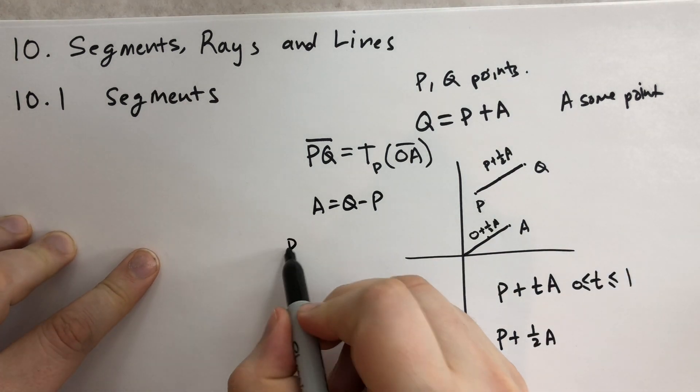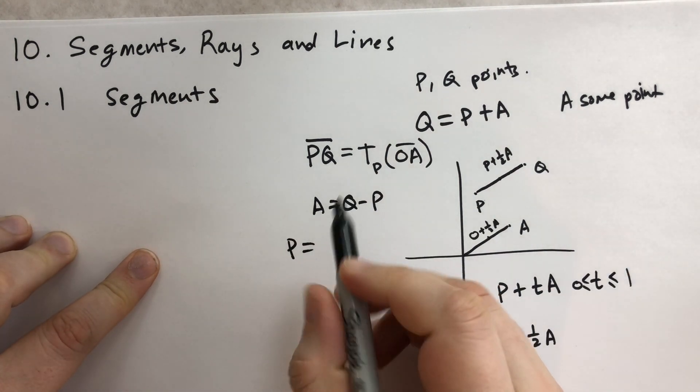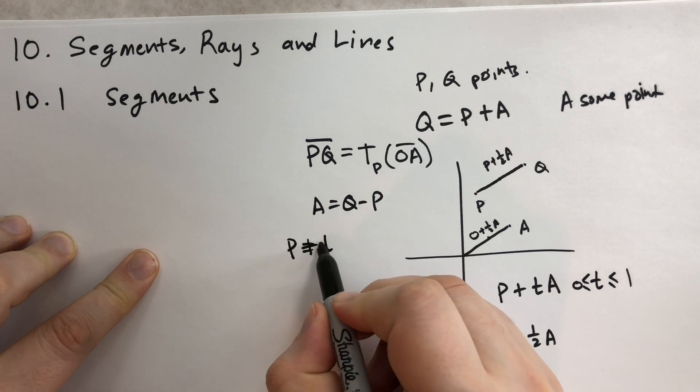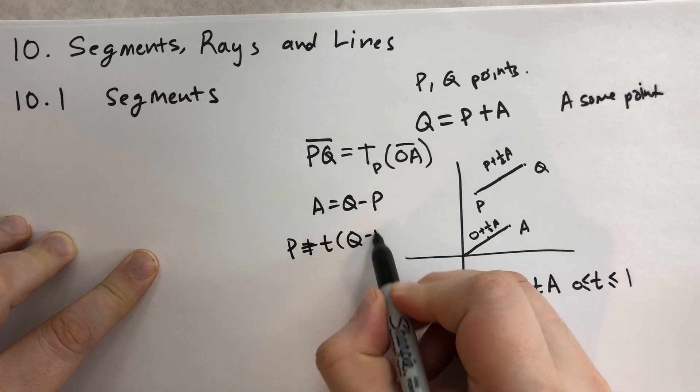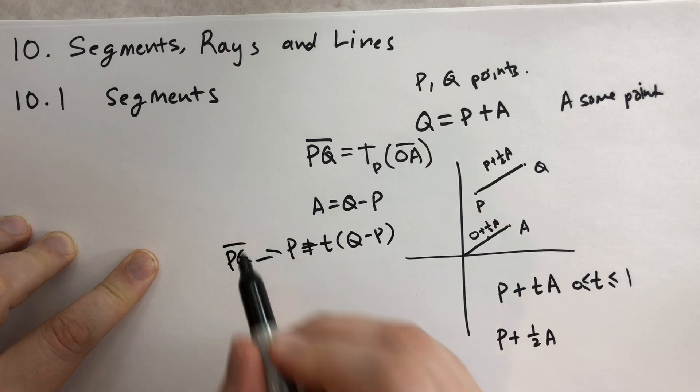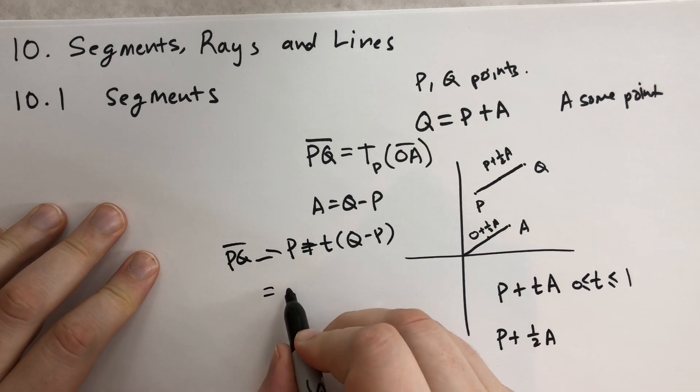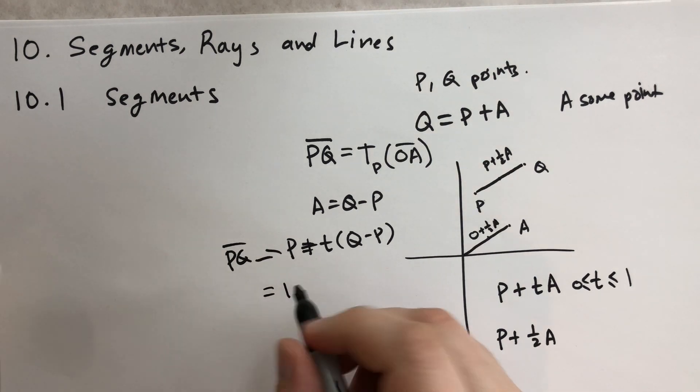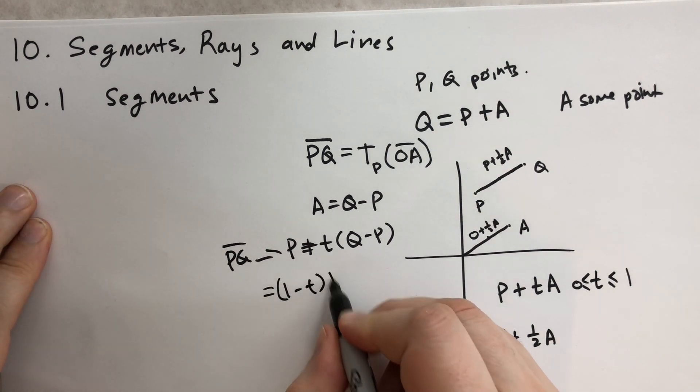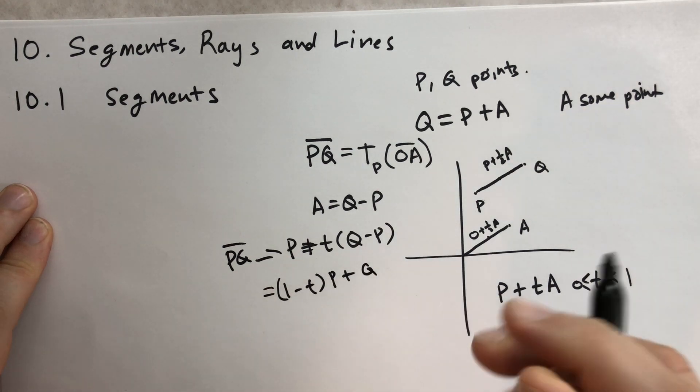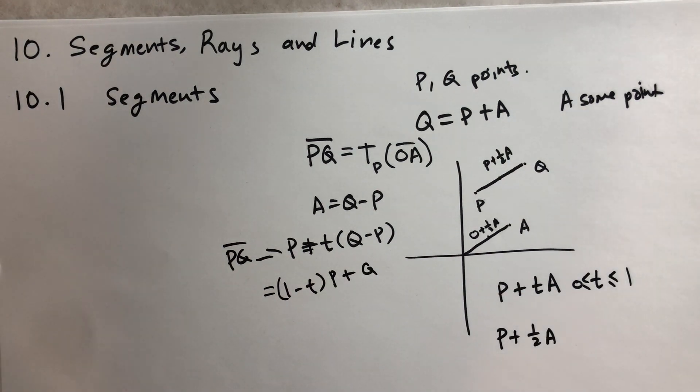Why do we get A? Well, A would just be Q minus P. So A equals Q minus P. We can rewrite this as P plus T times Q minus P. This is the line segment PQ. You can simplify this by saying it's 1 minus T times P plus TQ.